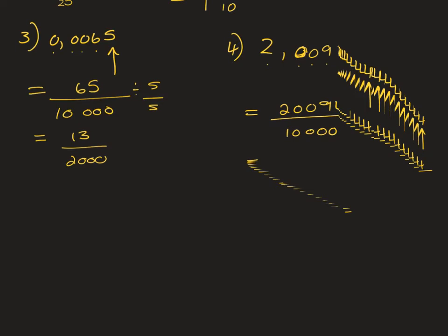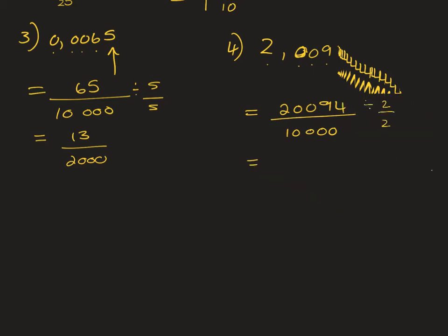Since it ends with an even number, try dividing by two. Dividing the top and bottom by two gives you 10,047 over 5,000. And 10,047 doesn't share any common factors with 5,000. A nice way to check yourself is to put the original decimal into your calculator — it will give you the common fraction. In this case it is an improper fraction, and we leave it as such.